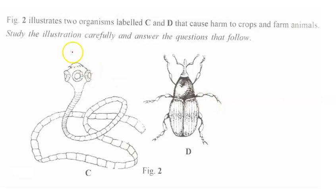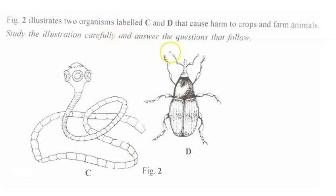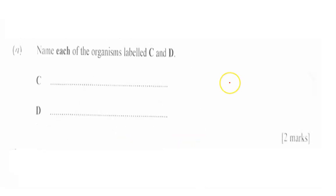Figure two illustrates two organisms labeled C and D that cause harm to crops and farm animals. We have to study the illustration carefully and answer the questions that follow. This is organism C and then organism D.